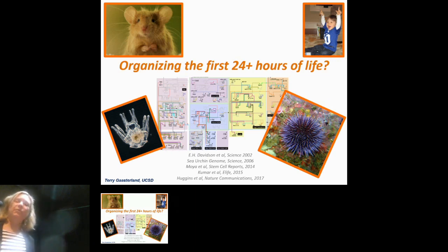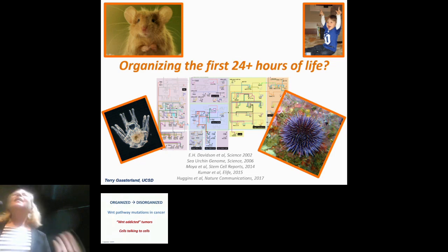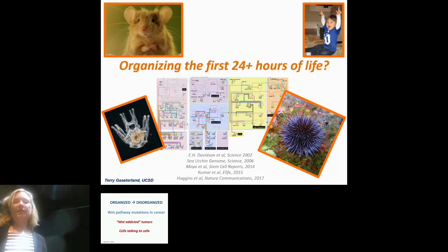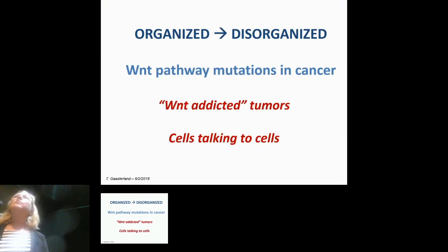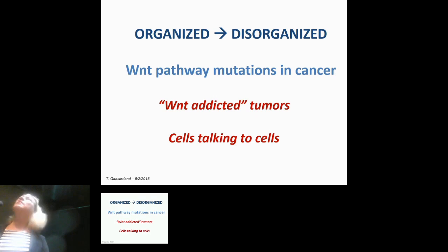What else does Wnt do? Organizing the first 24 hours of life — from Hydra to sea urchin to mouse to human — this is a critical pathway. When Wnt goes wrong, we go from organized to disorganized. There are many Wnt pathway mutations in cancer, and around 2014, the notion of Wnt-addicted tumors was recognized.